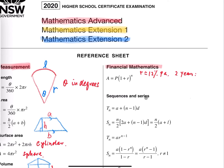If we compound yearly, then N equals two, because two years. But if we compound monthly, then N equals 24, because there are 12 months per year and two years gives 24 months. Also don't forget that in that case your R becomes 1% per month, not 12% per year.